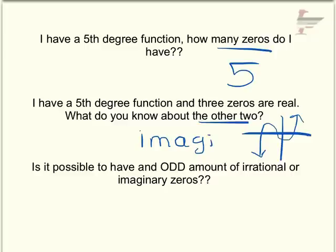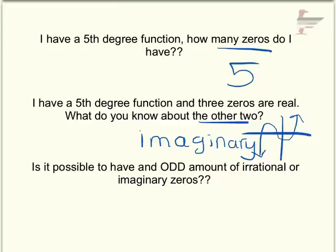Think about what any odd-degree function looks like — the end behavior always goes in opposite directions. If it crosses the x-axis three times, you have two imaginary zeros. If it only crosses once, the other four solutions would be imaginary.